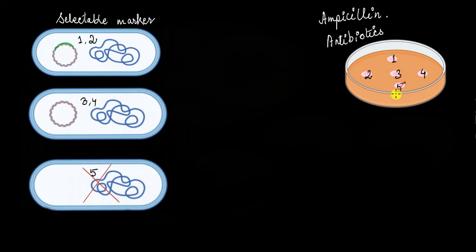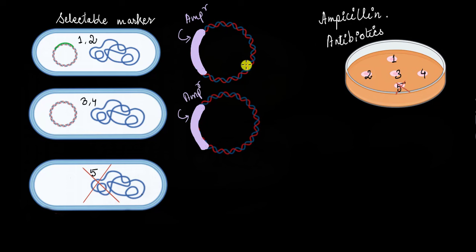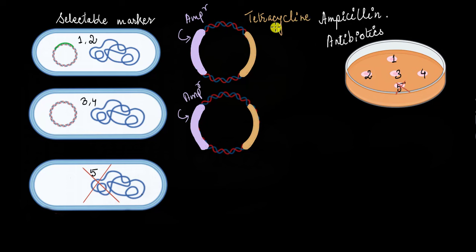But the problem is not solved yet. We still have colonies with two different types of cells, and both of these cells have the vector inside of it. As we have inserted the ampicillin resistance gene, both these vectors have the ampicillin resistance gene inside of them. So now the question is, how do we differentiate between the two? Because both cells have the vector inside of it, and making any further change in the vector would create the change in both cells.